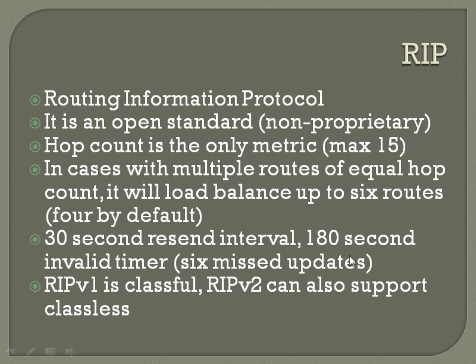RIP — Routing Information Protocol — is the main distance vector protocol we discuss. It's an open standard, meaning non-proprietary. Hop count is the only metric it uses, with a maximum hop count of 15. In cases with multiple routes of equal hop count, it will load balance up to six routes, with four being the default. So if you have two routes to the same network both with a hop count of three, it'll put both in the routing table and load balance between them.